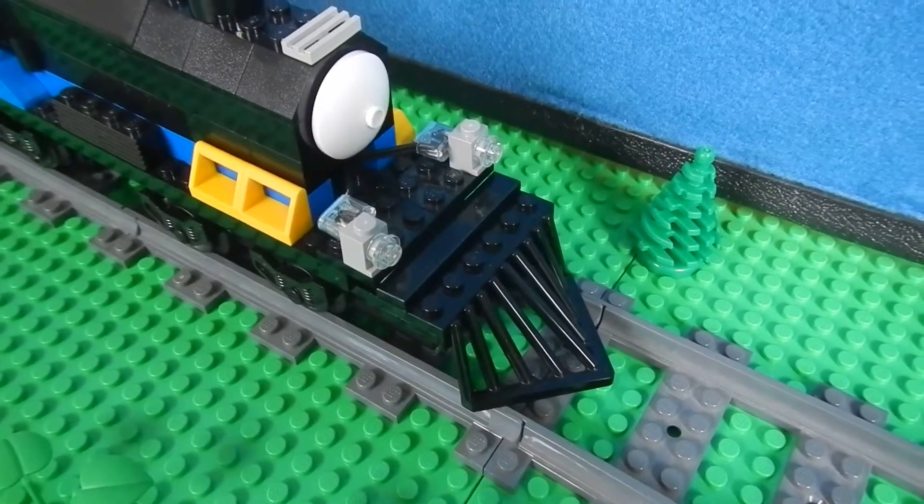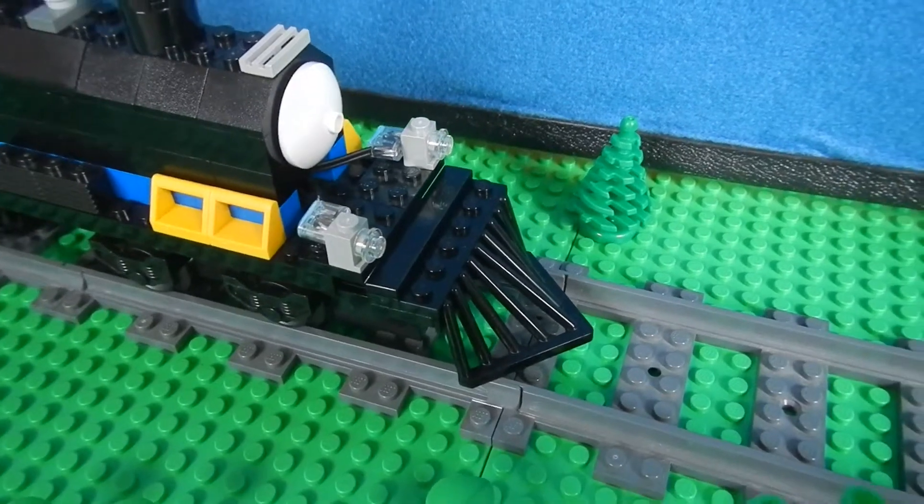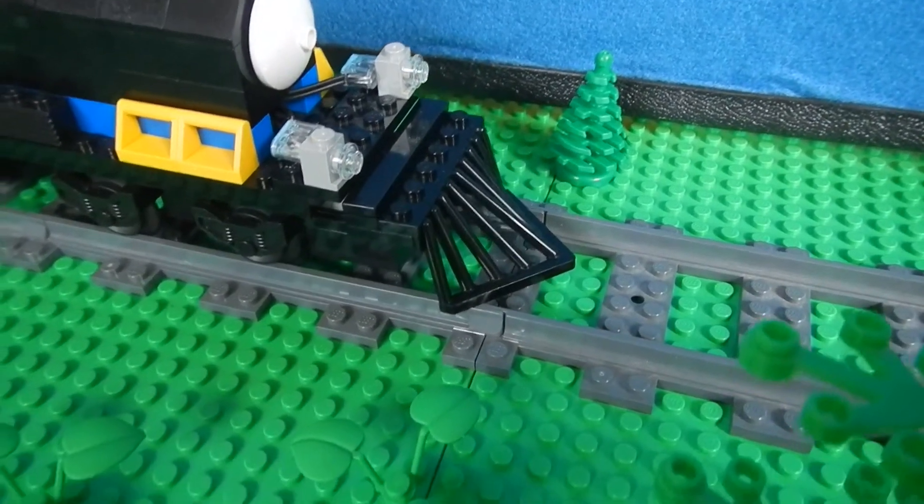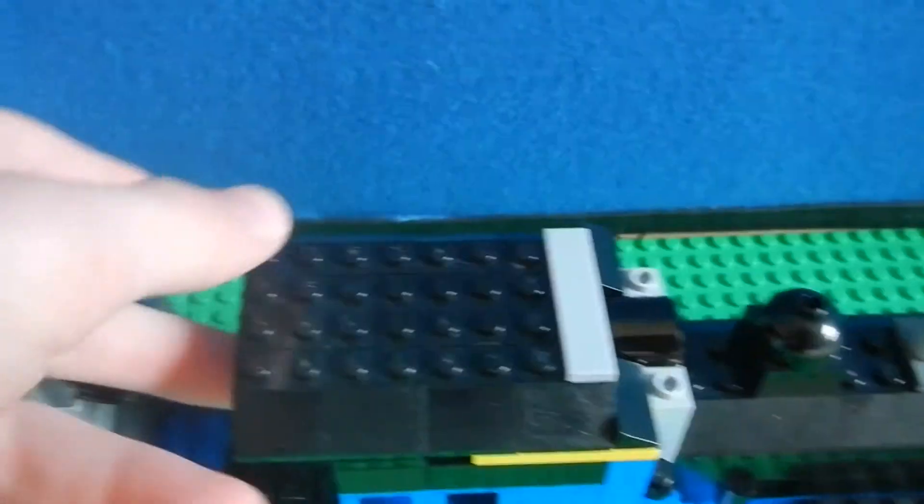One of the things that makes your Steam Train look a lot better is the cowcatcher up in front. You can easily get one from Lego and it doesn't cost very much. On top I have a removable roof.